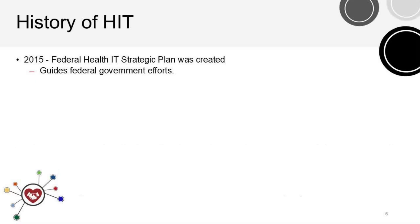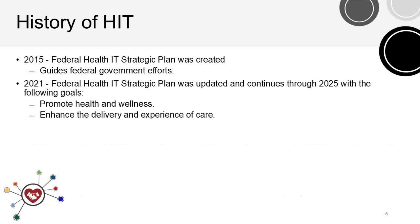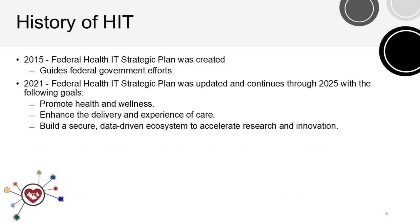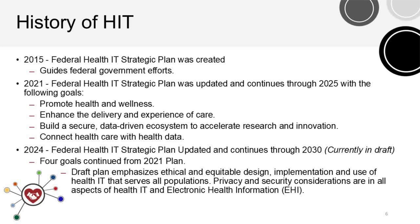The Federal Health IT Strategic Plan has been developed since then. It aims to promote health and wellness, enhance the delivery and experience of care, build a secure data-driven ecosystem to accelerate research and innovation, and connect healthcare with health data. The draft plan for 2024 emphasizes ethical and equitable design, implementation, and the use of health IT that serves all populations.